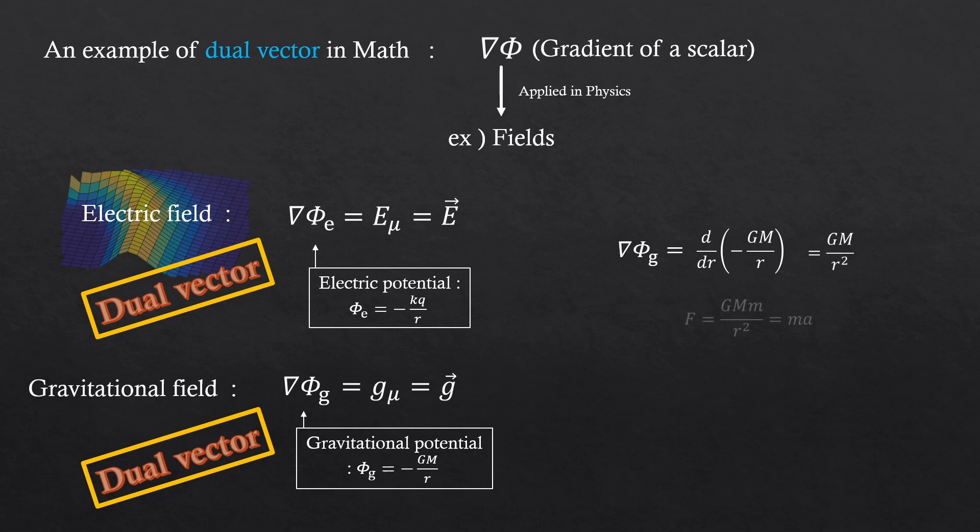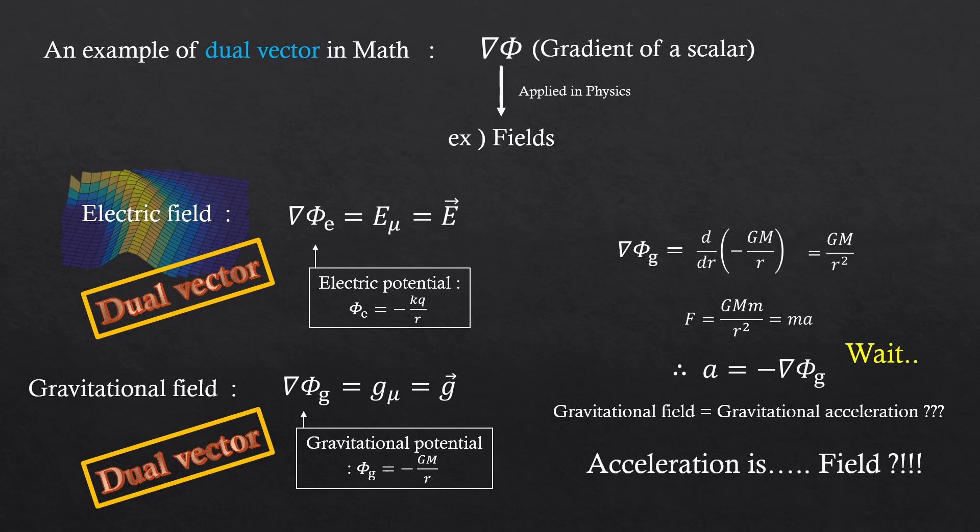We know that gravitational force is GMm over r squared, and force is equal to ma. So, that means gravitational acceleration is the gravitational field. Wait. Gravitational field is the gravitational acceleration? Acceleration is field?